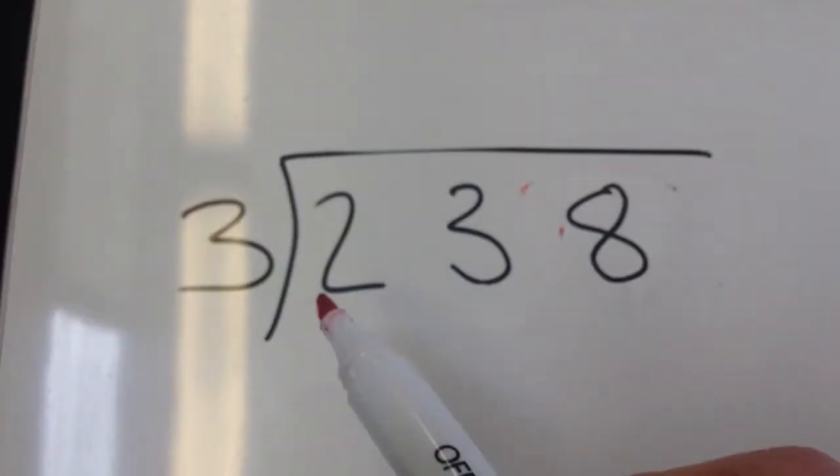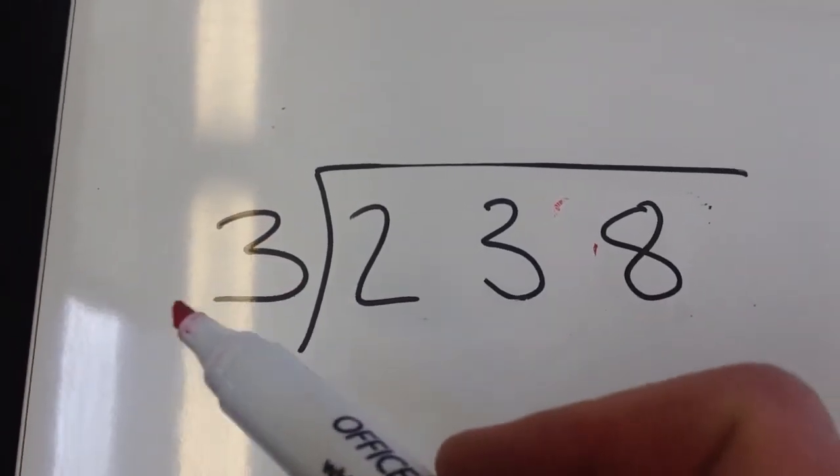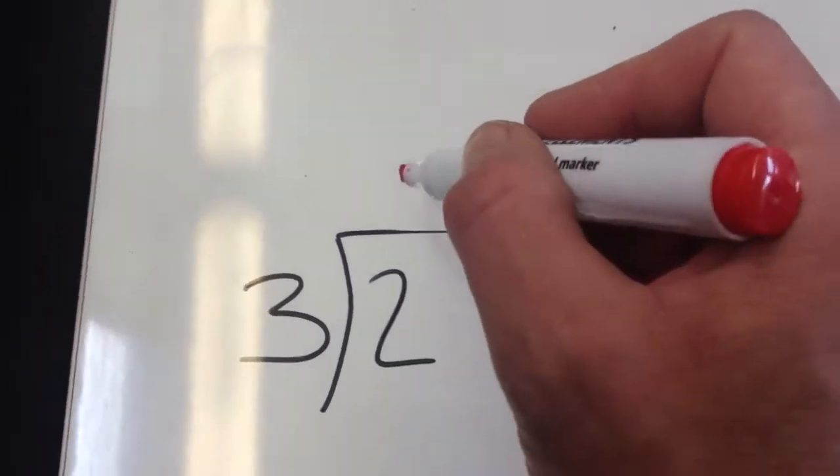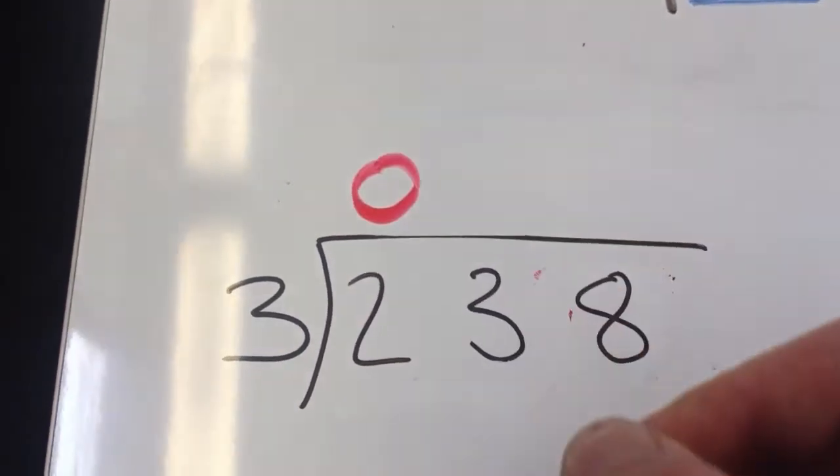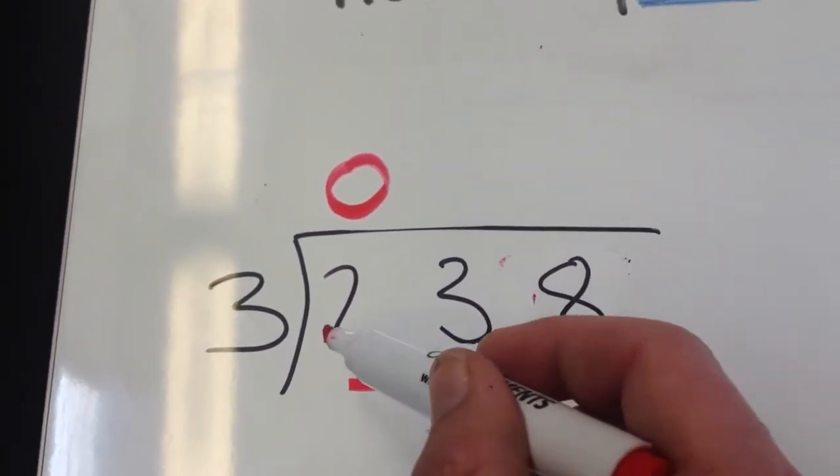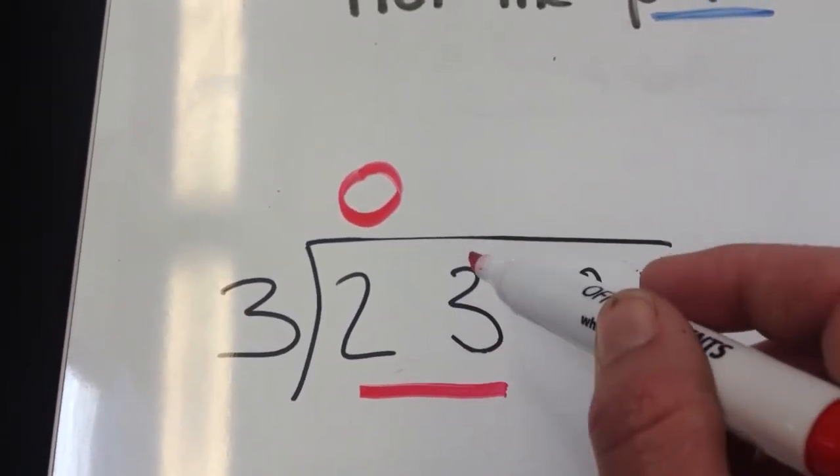First equation says 238 divided by 3. How many times does 3 go into 2? Well, we can't do that, so we put a 0 up here. Then, how many times does 3 go into 23? Because we've got those two numbers joined together now.